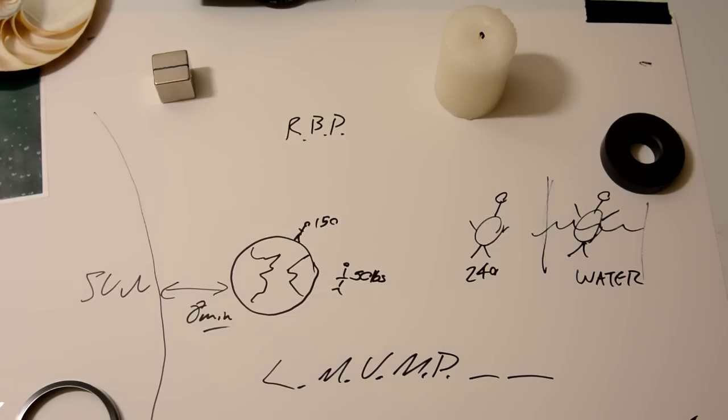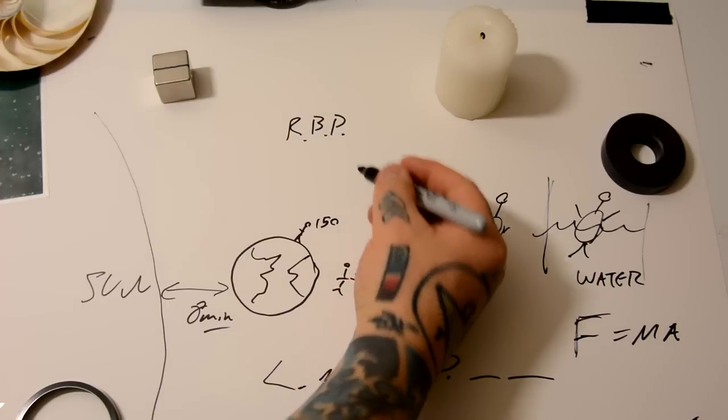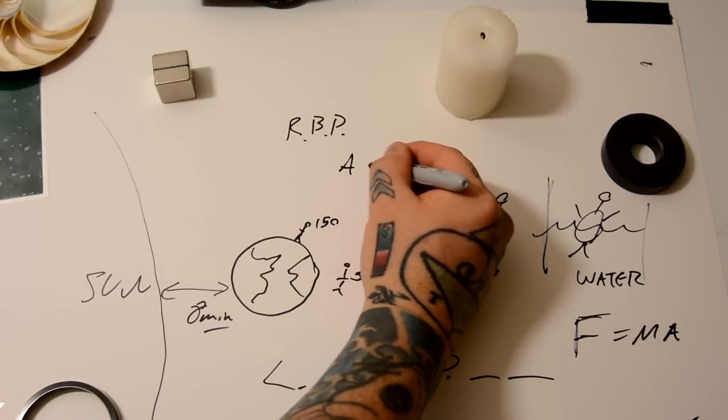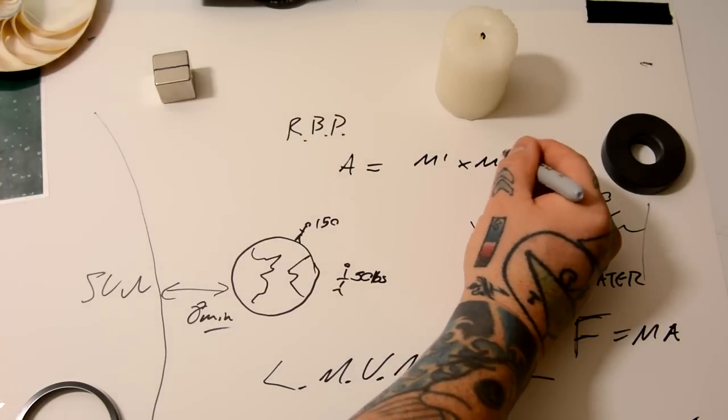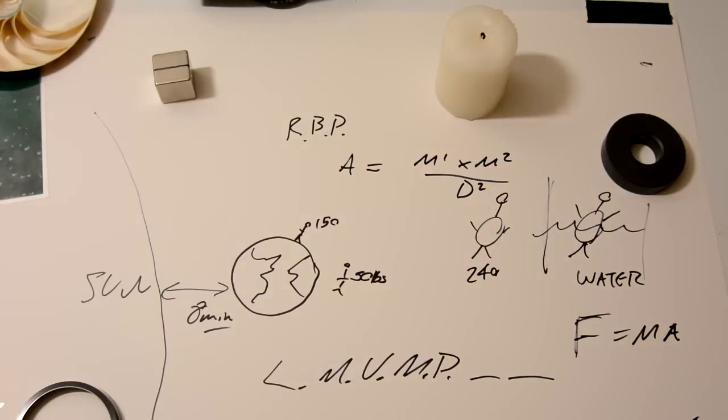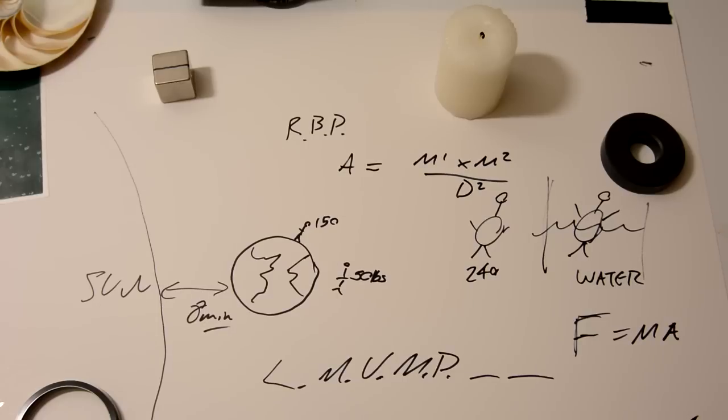Still have a mass. F equals MA, right? Well, FMA, force equals mass times acceleration. We're actually able to get around that. We have acceleration equals M1 times M2 over distance squared. We're actually able to get around that if we understand field coherency, as I explained in a prior video. Incommensurability. Yes. Actually, we are able to get around that.